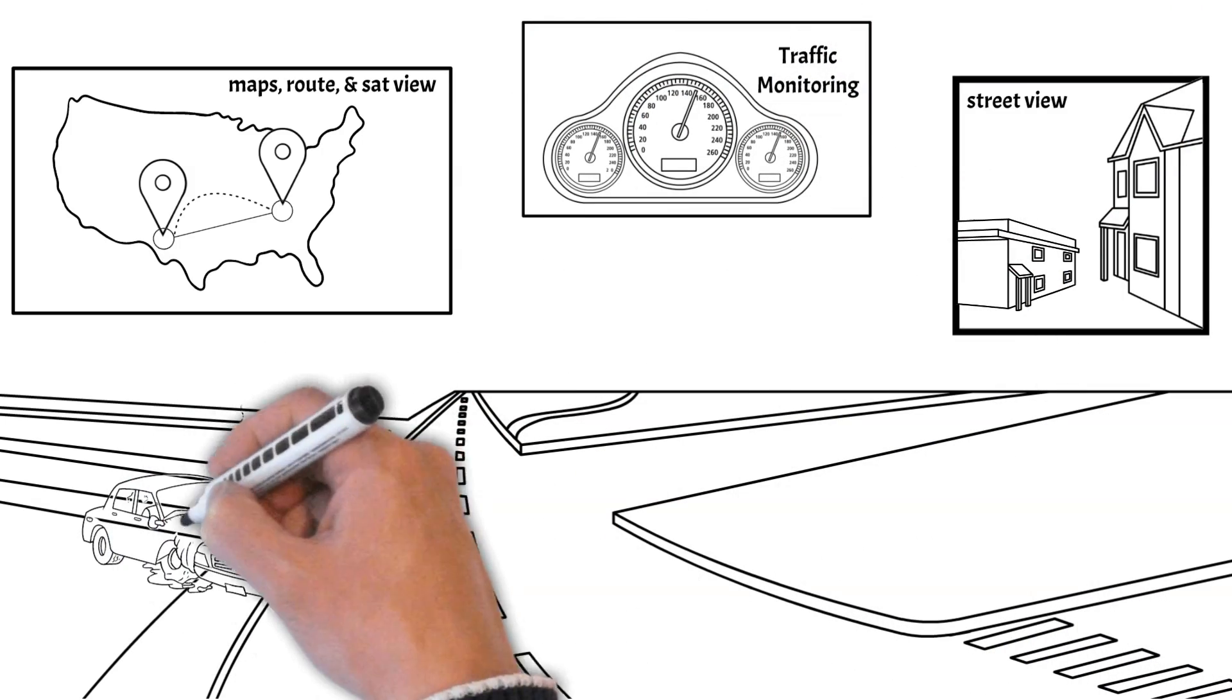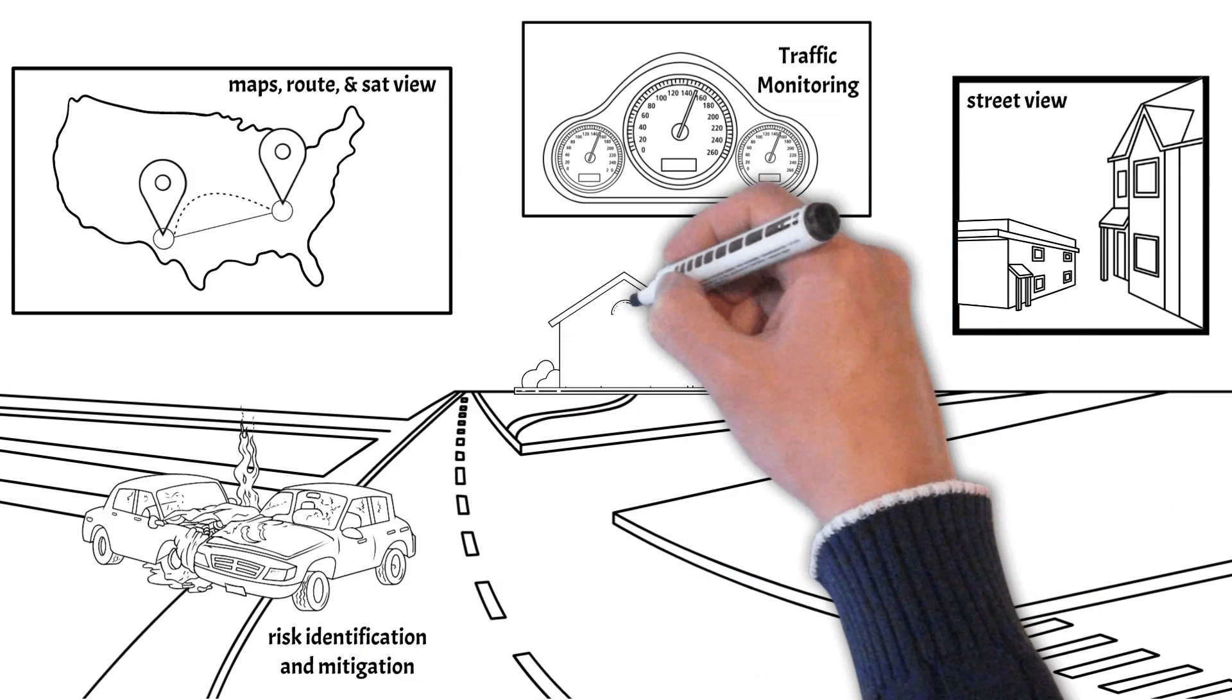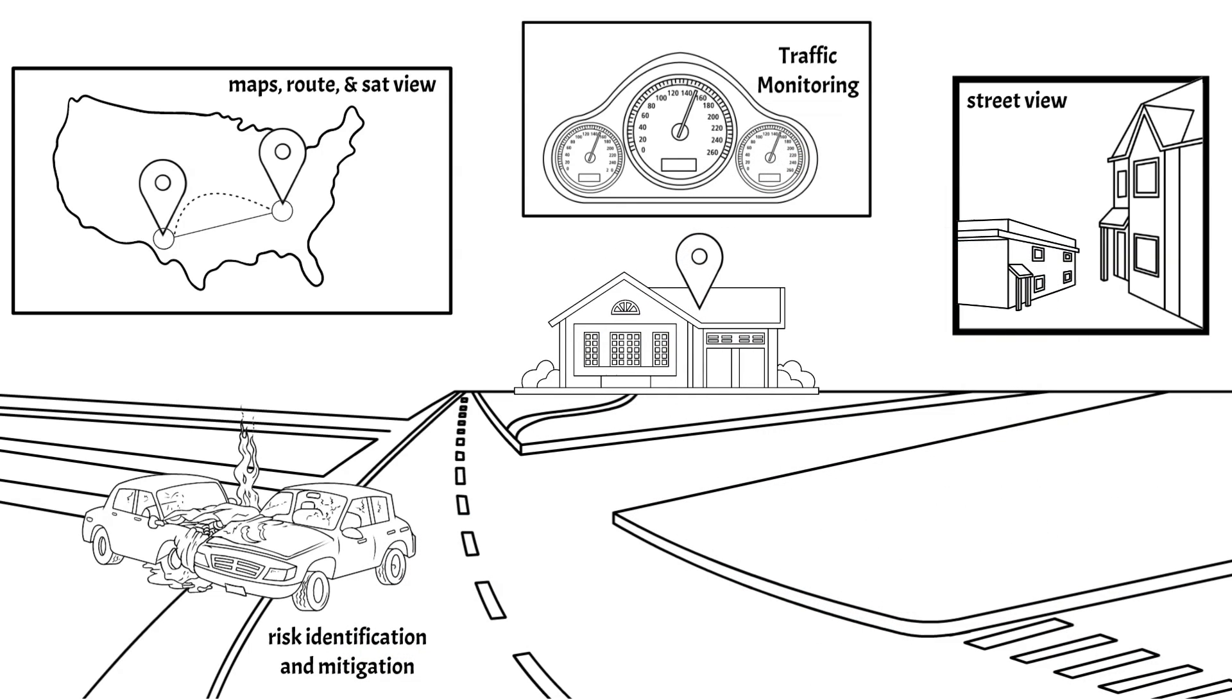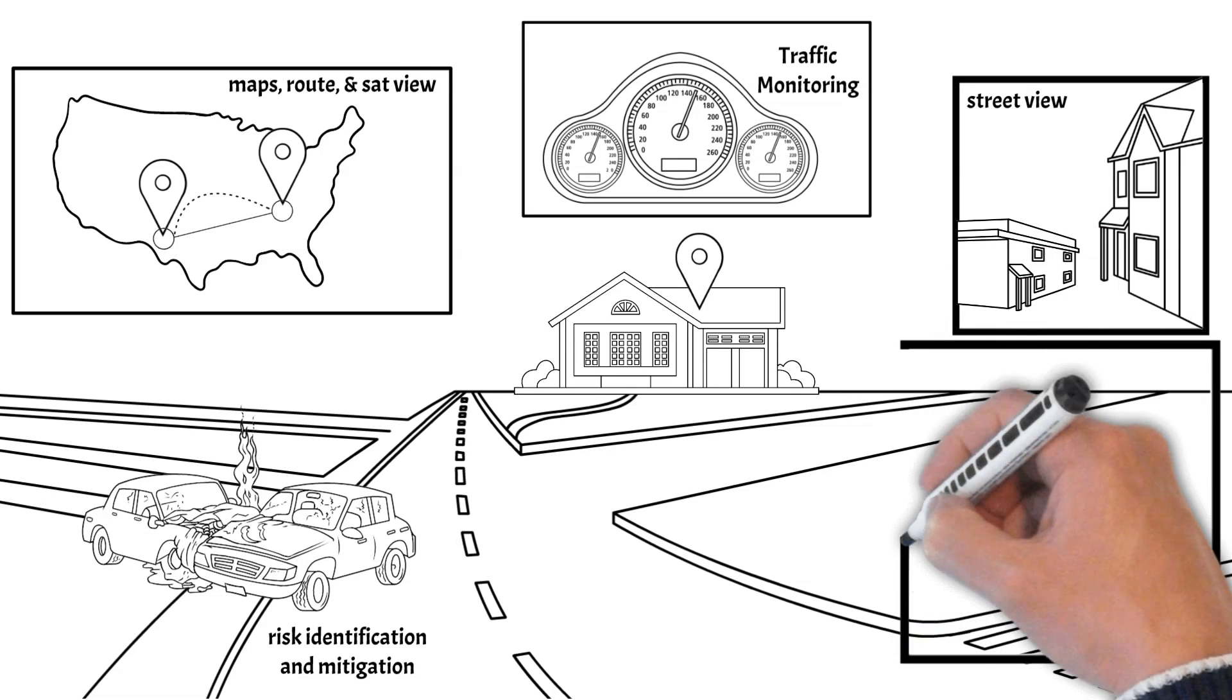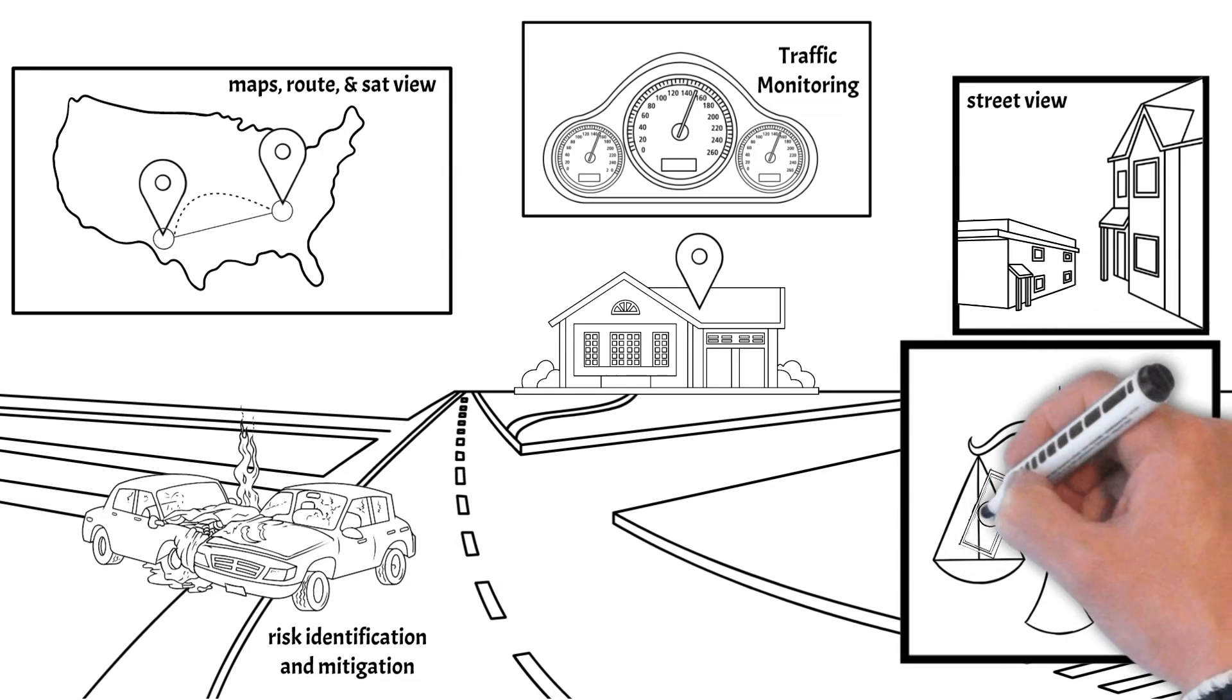For example, in a route with tolls, Google Maps allows the user to optimize schedule and cost. You can pick the toll road route, pay the toll and get to the destination faster, or select the side road alternative for free while sacrificing some time to the destination.